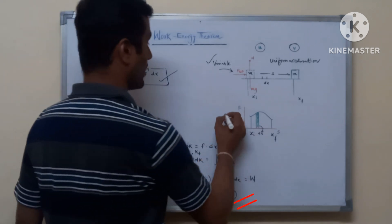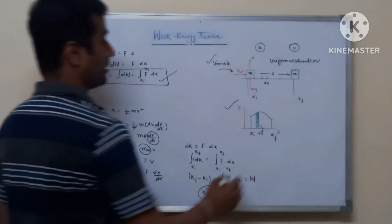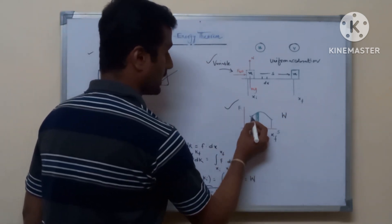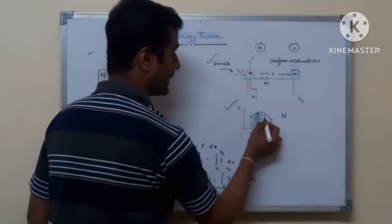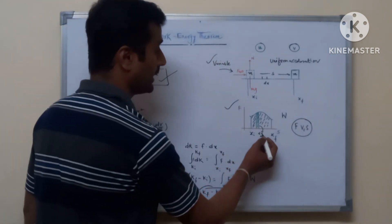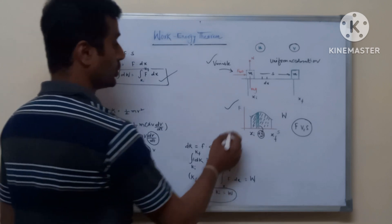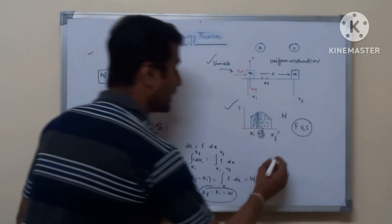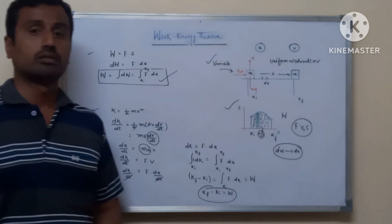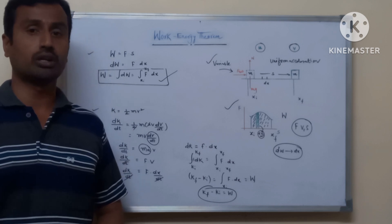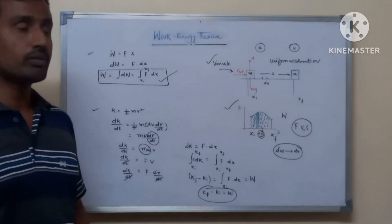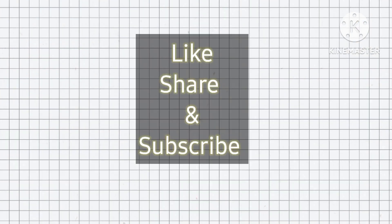The variable force acting on the body is responsible for the work done. The work done is calculated by determining the area of the force versus displacement graph, where dx is the small displacement due to the external force and dW is the corresponding work done. Note that the work-energy theorem gives only a quantitative measure of work done and cannot provide any information about the cause of the motion.